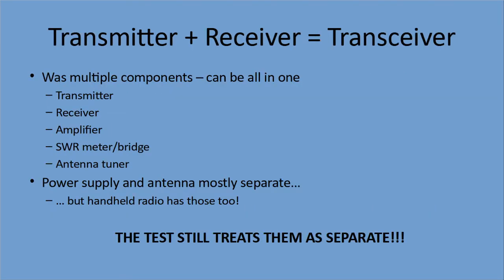A transmitter and a receiver together are a transceiver. Most modern radios are transceivers, even the handhelds — you transmit and you receive from the same device. Historically, there were multiple separate components: a transmitter, a receiver, a separate amplifier sometimes, separate meters — you'll see the term SWR meter or bridge — and antenna tuners. That can all be in one today. The power supply and antenna are mostly separate, but in your handheld it has the power supply, the battery, and the antenna included as well. For the test, treat everything as separate and everything will go better for you.